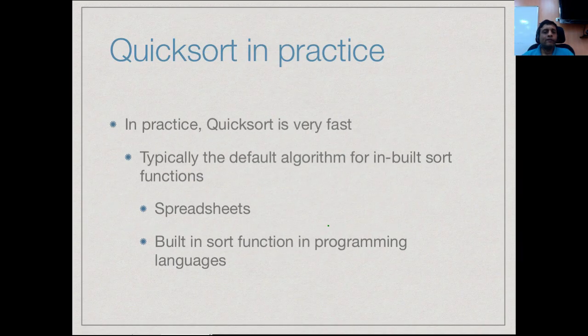A final remark before we leave quicksort for now. In practice quicksort is very fast. As we said, the worst case happens very rarely. For this reason, typically quicksort is the default algorithm that you see that people use when you have a built-in sort function. If you have a spreadsheet and it allows you to sort a column, then usually the algorithm running in the background to sort that column is quicksort.